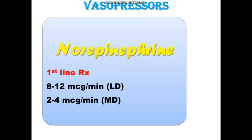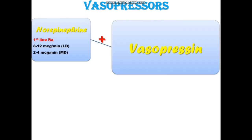Norepinephrine is the first-line treatment. The loading dose is 8 to 12 micrograms per minute and the maintenance dose is 2 to 4 micrograms per minute. Norepinephrine is preferred over dopamine because dopamine causes increased arrhythmias and increased mortality, while norepinephrine decreases both.